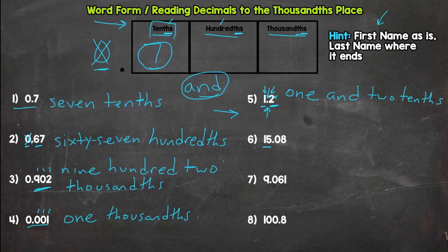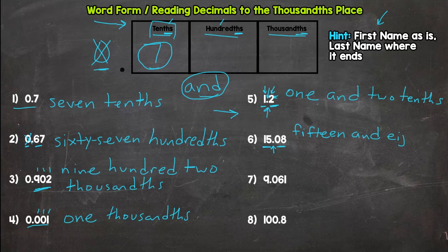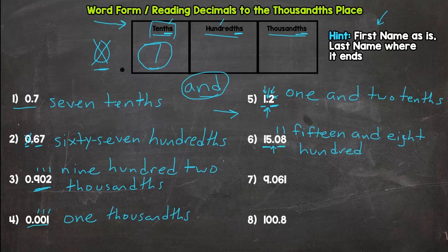Number six: read the whole number first — that's 15. Then say the word and for the decimal. Read the decimal portion as is: eight. Where does it end? Tenths, hundredths — it ends in the hundredths place. So fifteen and eight hundredths. Remember: not hundreds — hundredths. Make sure you have the 'ths' when working with decimals.